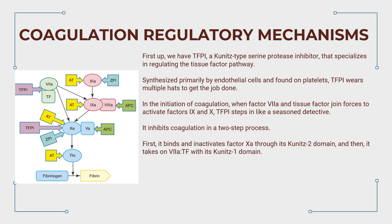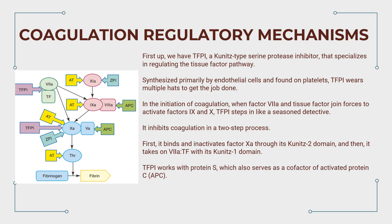First, it binds and inactivates activated factor X through its Kunitz-2 domain, and then it takes on VIIa-tissue factor with its Kunitz-1 domain. TFPI doesn't work alone — it has a trusty sidekick known as protein S, which also serves as a cofactor of activated protein C, APC.